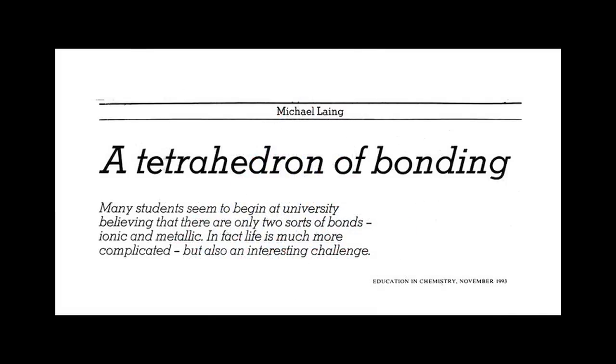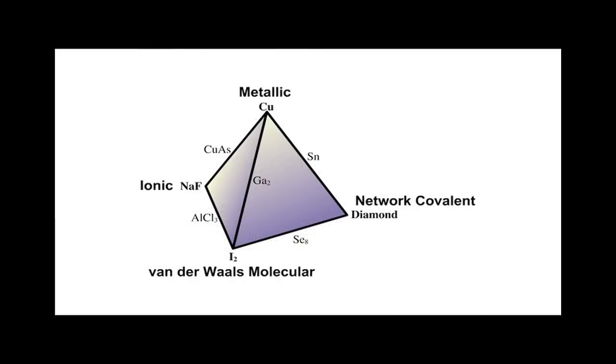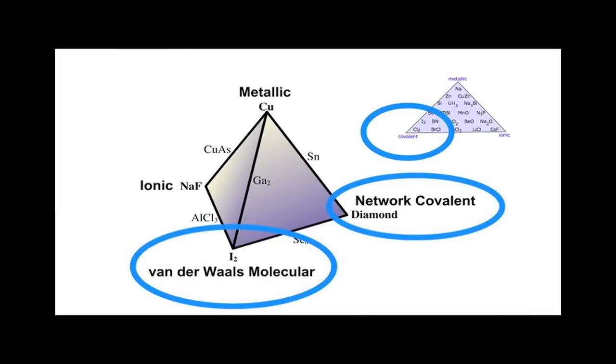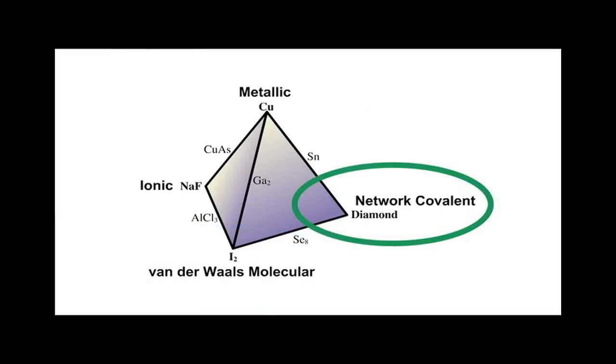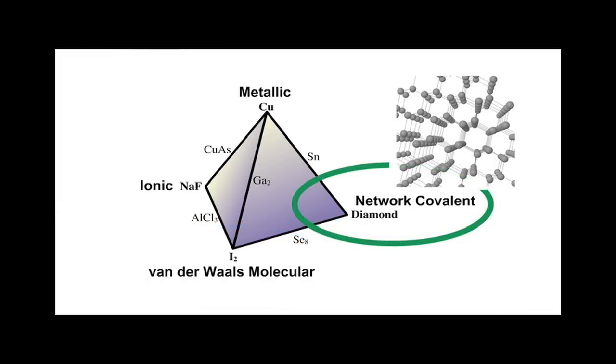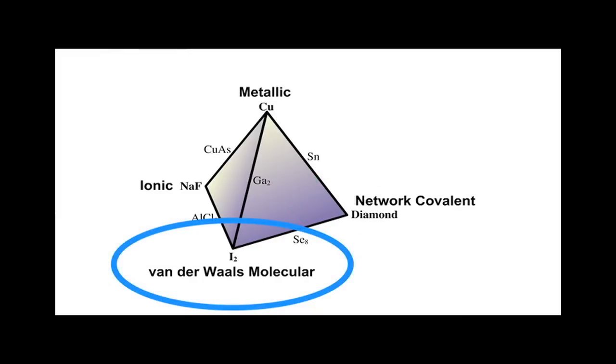In 1993, Michael Lang published a paper which talked about a tetrahedron of bonding, because Lang realized that when we talk about covalent materials, there are two distinct types. We have network covalent materials like diamond, and we have molecular materials like iodine or fluorine.